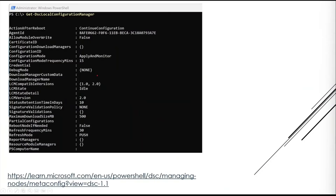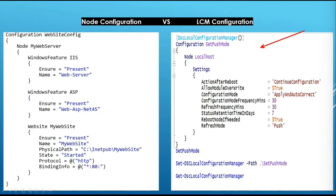The LCM configuration looks very similar to a node configuration, but the key difference is the DscLocalConfigurationManager meta tag. This tag tells PowerShell that this is a meta configuration — a configuration written specifically to modify LCM properties, rather than a standard node configuration.